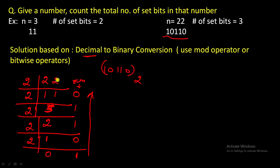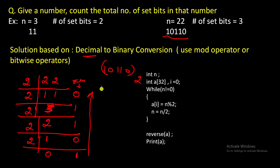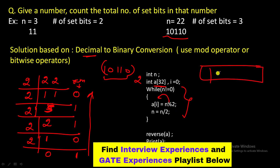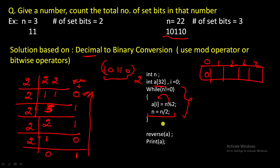So assuming the binary representation is a 32-bit number, we take an output array of 32 bits. While the number does not reduce to 0, we extract each bit using n mod 2 and store the remainder in the array at index i. Then we update n to n divided by 2 and increment i.